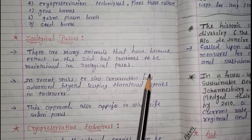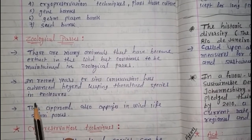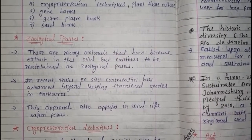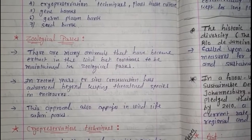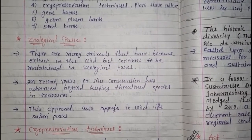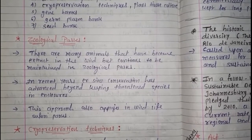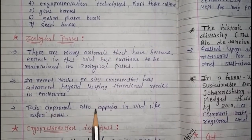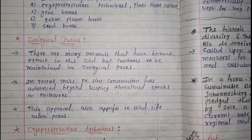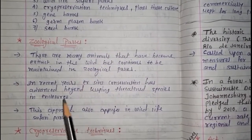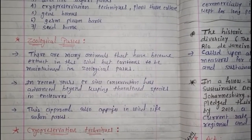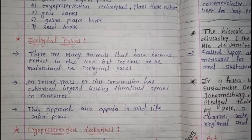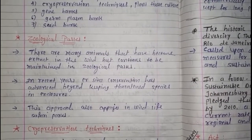In recent years, ex-situ conservation has advanced beyond just keeping threatened species in enclosures. Threatened species — those on the verge of extinction in the near future — are kept safely there, and everything like environment, food, and atmosphere is provided according to their adaptation. In zoological parks, animals are generally kept in large cages, and we can observe them from outside.